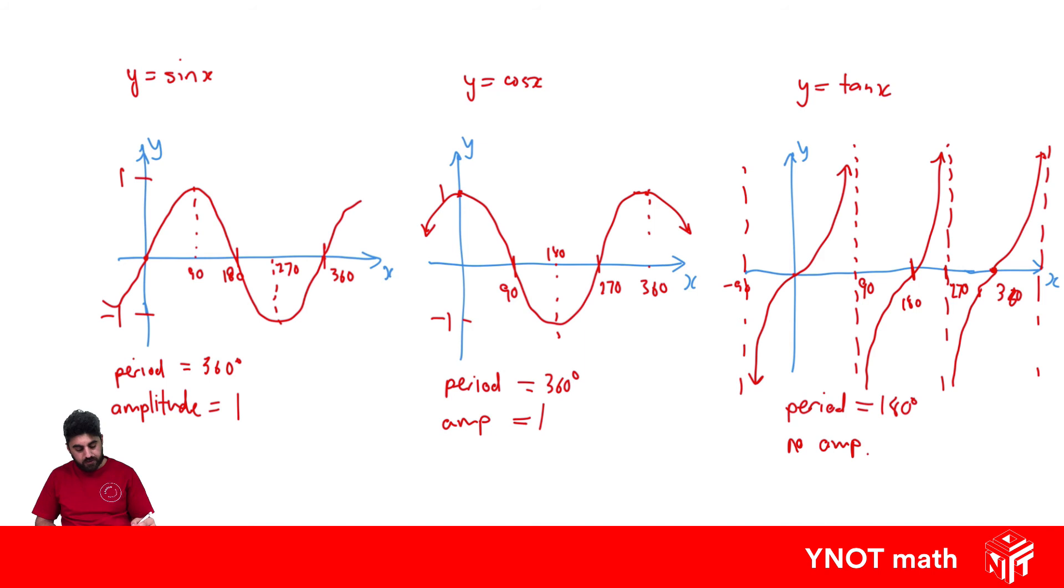Usually you're asked to graph them within a domain because they do go forever. If you're asked to graph between 0 and 360, for the sine graph you'd only be showing this section here. For the cos graph, you'd only be showing this section here. And for the tan graph, you'd be showing this section here.